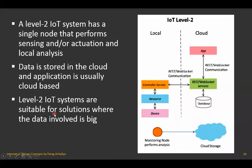Level two IoT systems are suitable for solutions where the data involved is big. From level two onwards, whenever there is big data, these systems can be used. Since all data is stored on the cloud side, there is no issue with local storage capacity. This is IoT level two, where it has two parts: local and cloud.